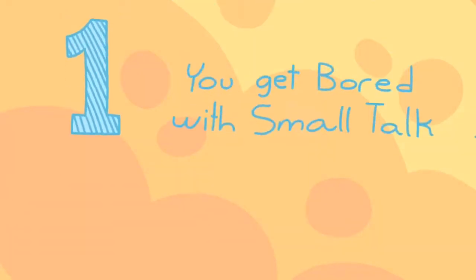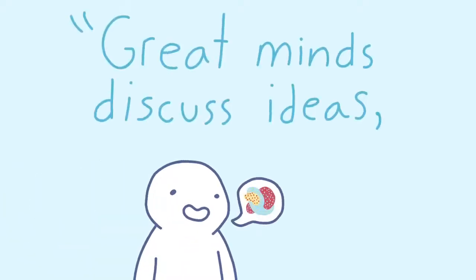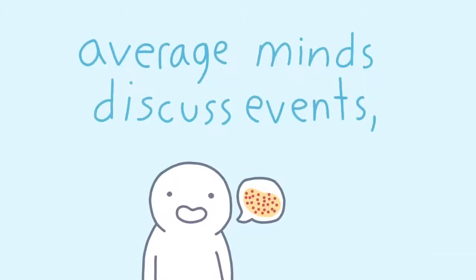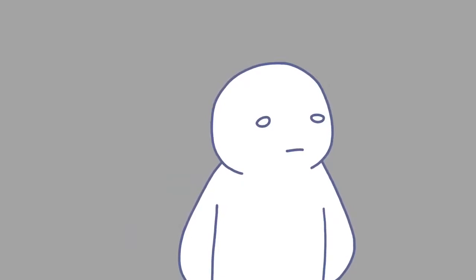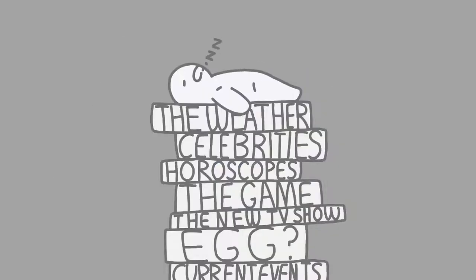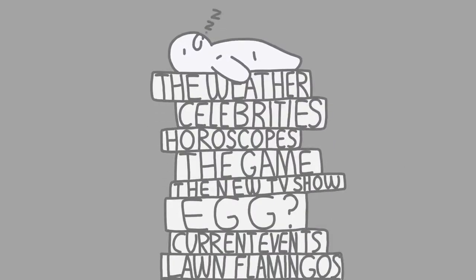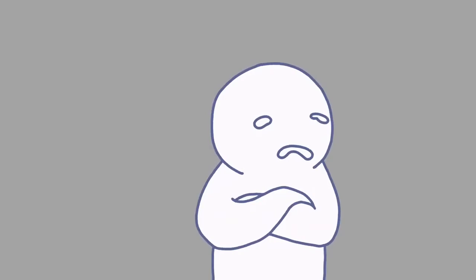One, you get bored with small talk. If you've ever heard the quote, Great minds discuss ideas. Average minds discuss events. Small minds discuss people. This is what it means. Highly intelligent people aren't drawn to what they consider the unimportant details of life. Chatting about the game or the neighbor's newest lawn flamingo isn't something they see as a must-talk-about item.